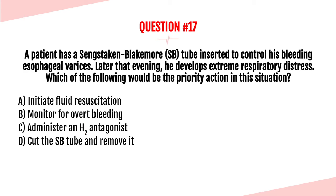Question number seventeen. A patient has a Sengstaken-Blakemore tube inserted to control bleeding esophageal varices. Later that evening he develops extreme respiratory distress. The priority action is D: cut the SB tube and remove it. The most likely reason for sudden extreme respiratory distress is that the gastric balloon ruptured and lodged in the upper airway. This is why you always want to have scissors at the bedside.